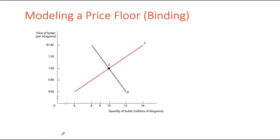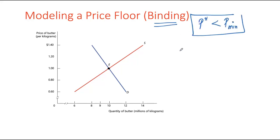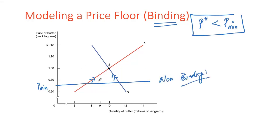Looking at our butter market example, with demand and supply curves measured in millions of kilograms, the equilibrium price is $1 per kilogram. If the government feels this is too low and sets a binding price floor above the market price — a floor set below equilibrium would be non-binding, since a shortage would push the price back up to equilibrium. So a binding price floor must be set above equilibrium price.